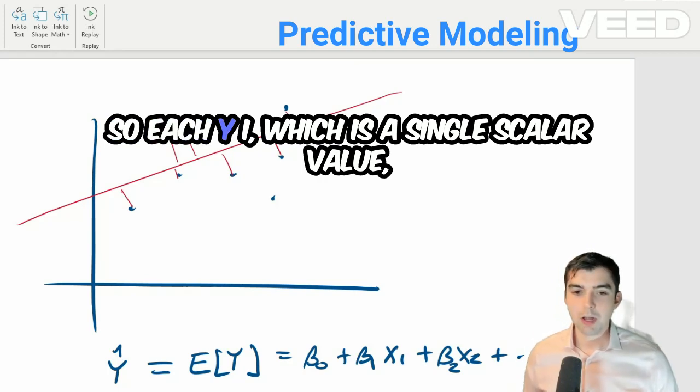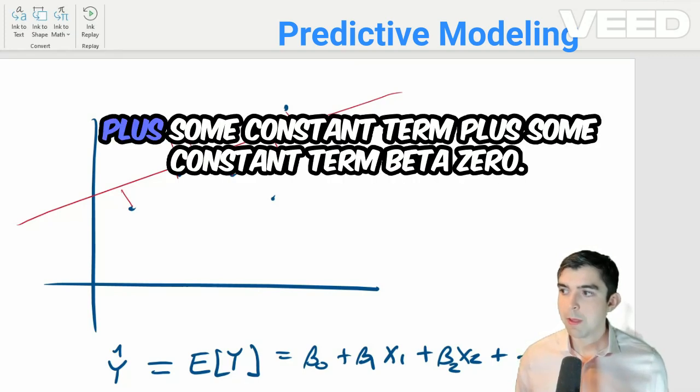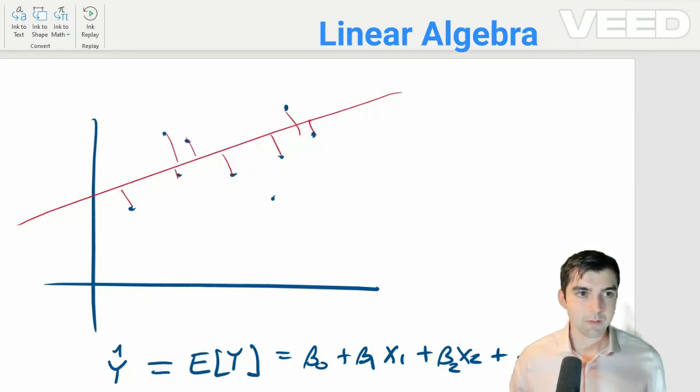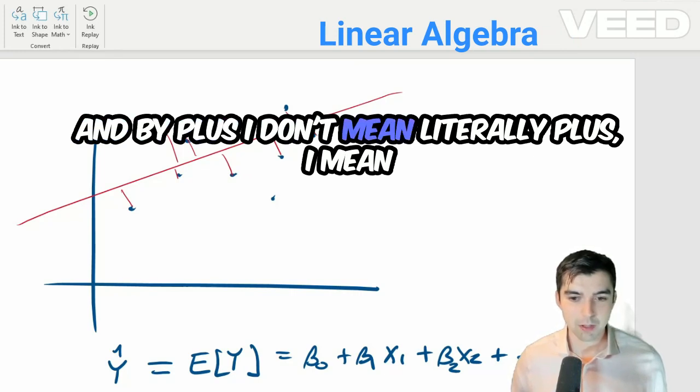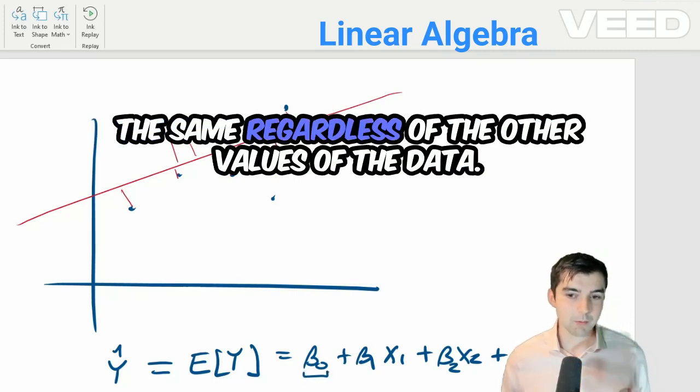So each yi, which is a single scalar value, is a linear combination of x1i through xip, plus some constant term beta 0. And by plus, I don't mean literally plus. I mean that there's this beta 0 term here, which is always the same regardless of the other values of the data.